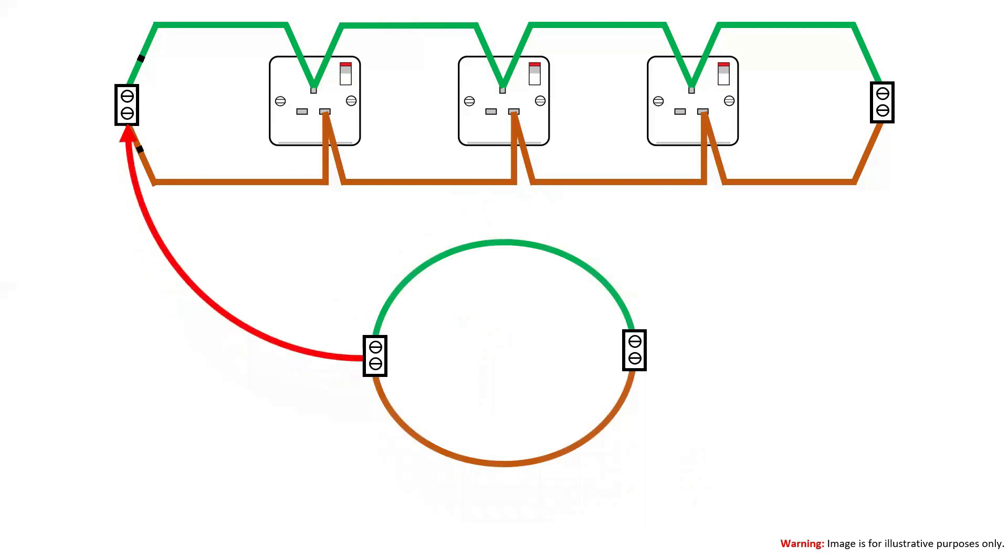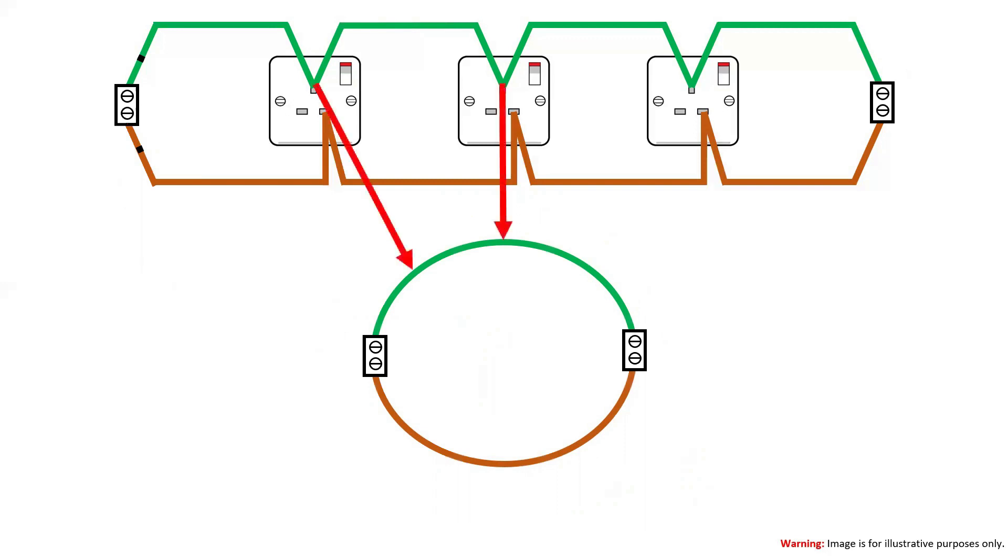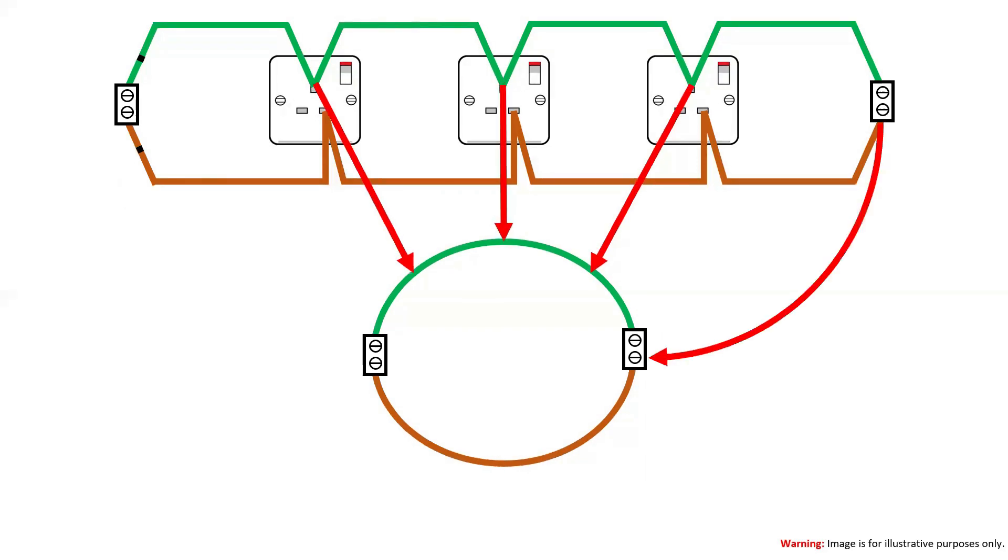If I then draw this out into a circle, you can see that if we follow the ring around from this connector block here, the CPC goes around the circuit clockwise. For ease, I've made these sockets equidistant so that they are equal thirds around the ring. The points highlighted by the arrows are to represent where the CPCs are connected at the sockets at each point in the ring before coming back to the other connector block here.